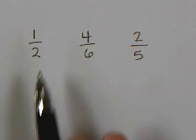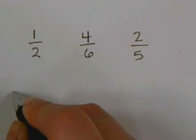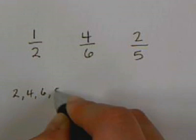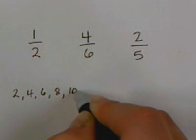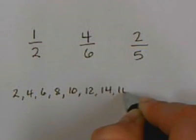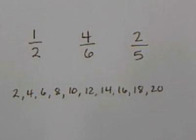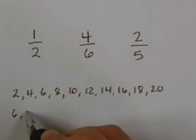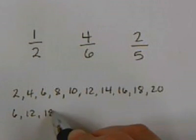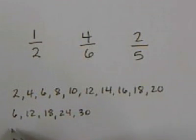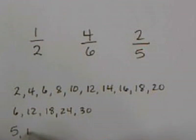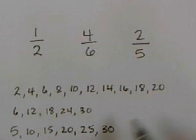We start with 2 and list our multiples: 2, 4, 6, 8, 10, 12, 14, 16, 18, and 20. Now we list our multiples for 6: 6, 12, 18, 24, 30. Now our multiples for 5: 5, 10, 15, 20, 25, 30. For 6 and 5, our least common multiple is 30.